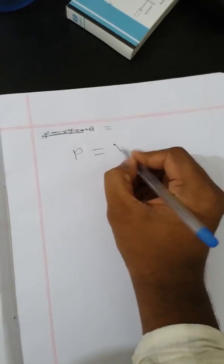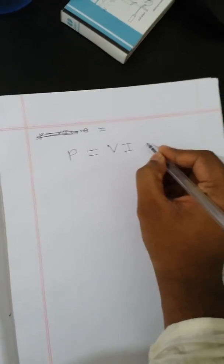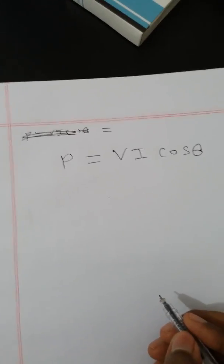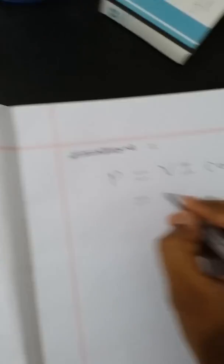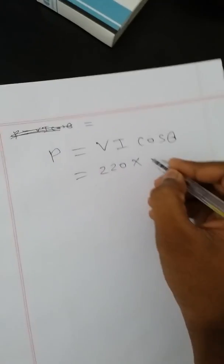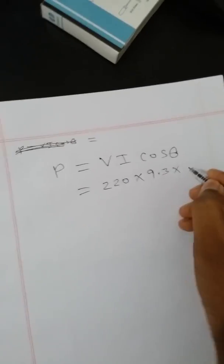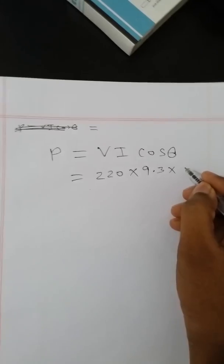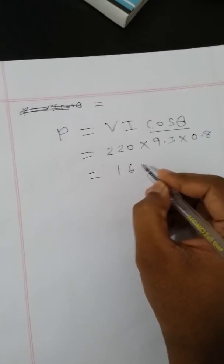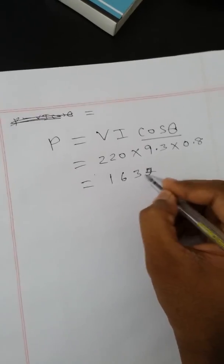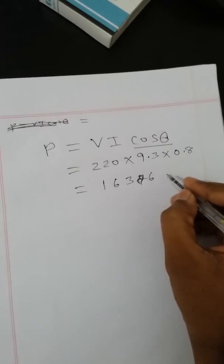Now I will calculate what power it will take per hour. We know P equals V times I times cos theta. The voltage here is around 220 volts - about 219 to 220. The current is around 9.3 amps, and we assume the power factor cos theta is 0.8. Multiplying them gives us approximately 1636 to 1637 watts.